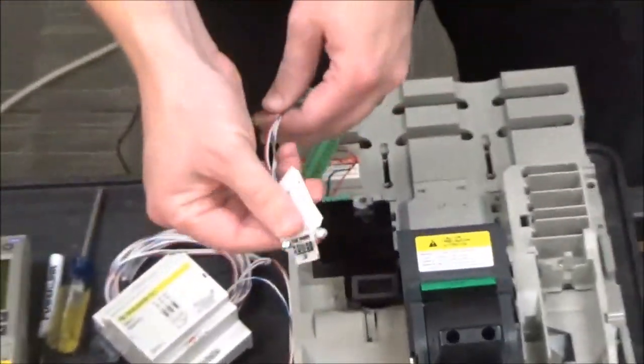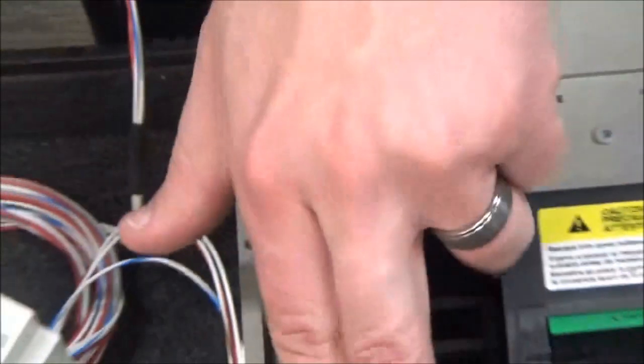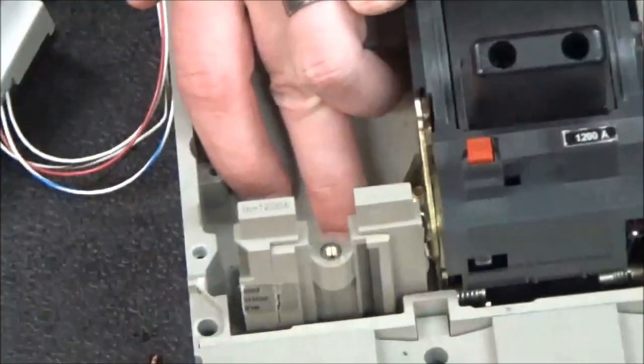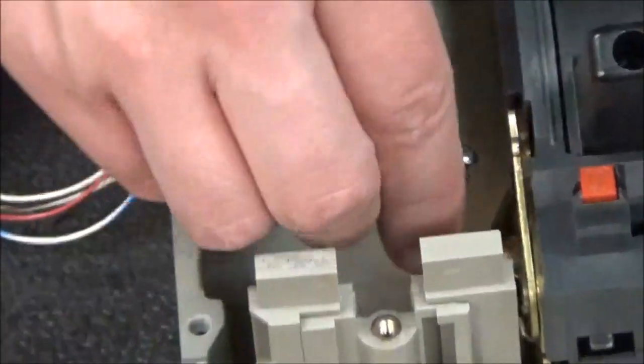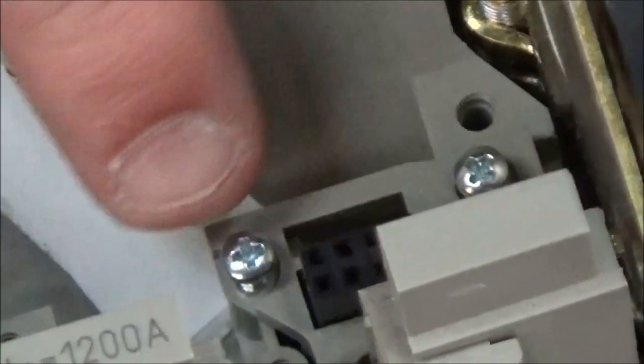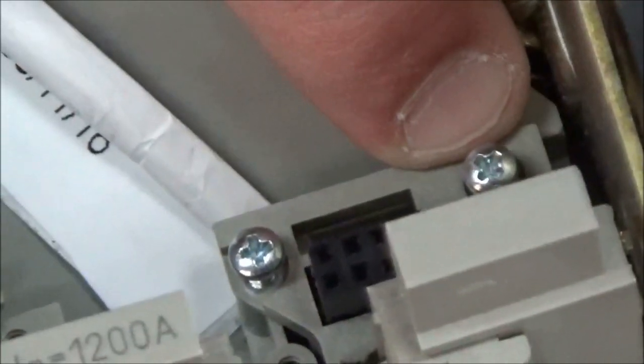You'll insert this connector into this slot on the breaker. Once you have it in place, you will tighten these two screws.